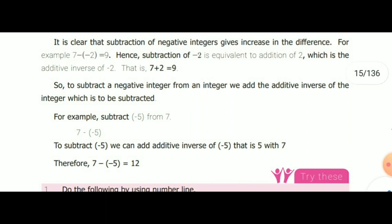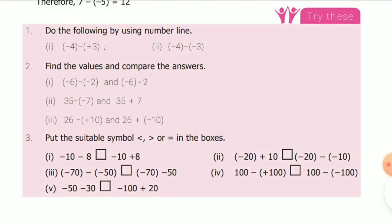Next, subtract minus 5 from 7. We write this as 7 minus (minus 5). Take the additive inverse of minus 5, which is plus 5. So 7 plus 5 equals 12. Now see your book PDF — the 'try these' sums are given there. See them and do them in your rough notebook.